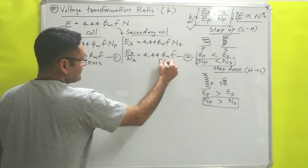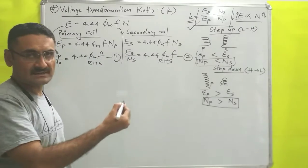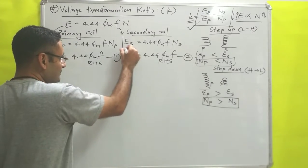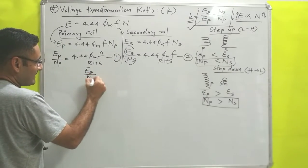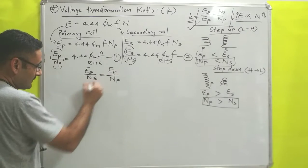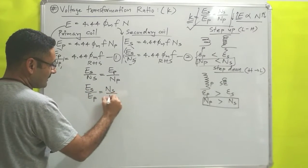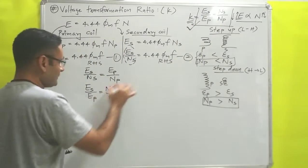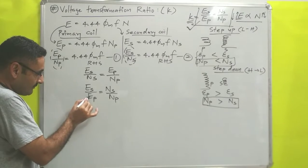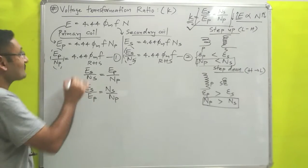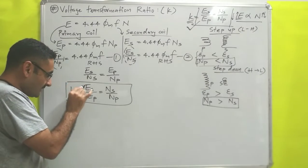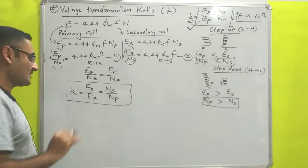Observing equations 1 and 2, both have the same right-hand side. If the right-hand sides are equal, the left-hand sides must also be equal. Therefore, Es / Ns = Ep / Np, which gives us Es / Ep = Ns / Np. This is the voltage transformation ratio K. The ratio of voltage in the secondary coil to the voltage in the primary coil is known as the voltage transformation ratio K.